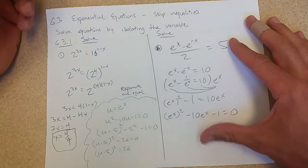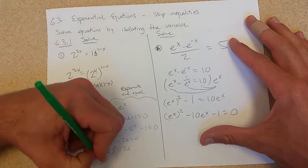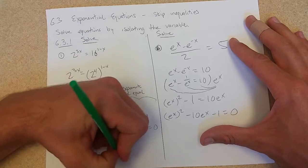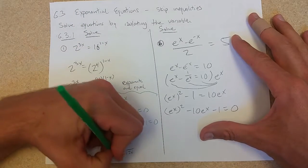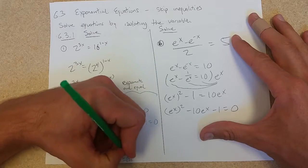So I'm going to square root both sides. Don't forget plus or minus. So u equals 5 plus or minus square root 26.